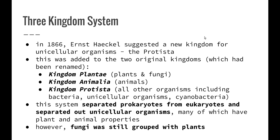In 1866, Ernst Haeckel introduced the three-kingdom system by suggesting a new kingdom for unicellular organisms — the Protista. This was added to the two original renamed kingdoms: kingdom Plantae (plants and fungi), kingdom Animalia (animals), and kingdom Protista (all other organisms including bacteria, unicellular organisms, and cyanobacteria). This system separated prokaryotes from eukaryotes and separated out unicellular organisms, many of which have both plant and animal properties. However, at this point fungi were still grouped in with the plants.